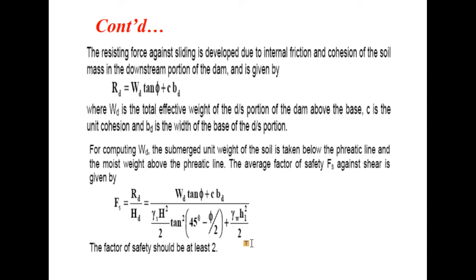The resisting force against sliding is developed due to internal friction and cohesion of the soil mass in the downstream portion of the dam. This resisting force RD equals W_D tan phi plus c times BD, where W_D is the total weight of the downstream portion above the base, c is the unit cohesion, and BD is the width of the base of the downstream portion.